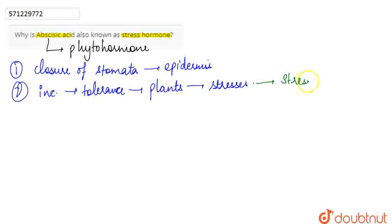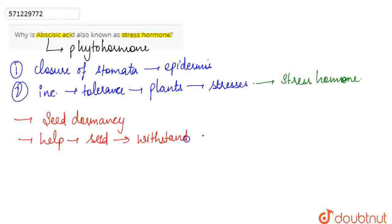Hence, it is considered as the stress hormone. Apart from this, there are some other reasons that it is considered as a stress hormone because it promotes seed dormancy, and it ensures that the seed germinates under favorable condition only. So, it basically helps the seed to withstand against the unfavorable condition or against desiccation.